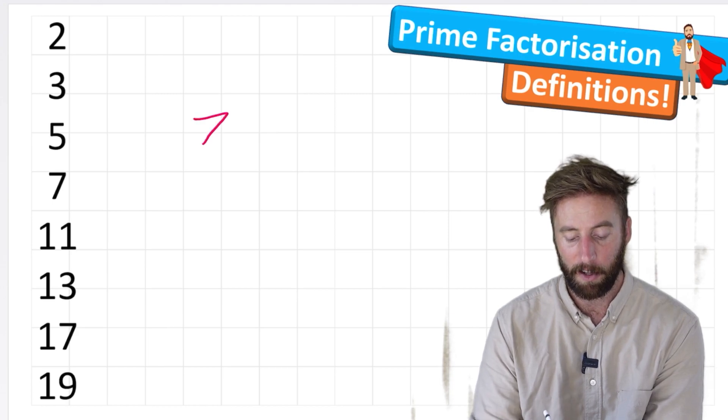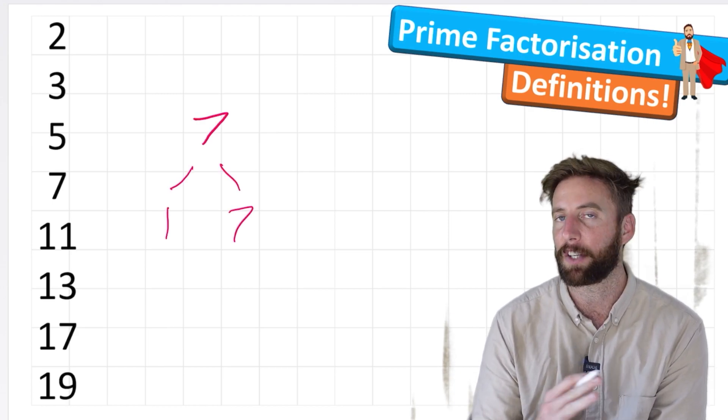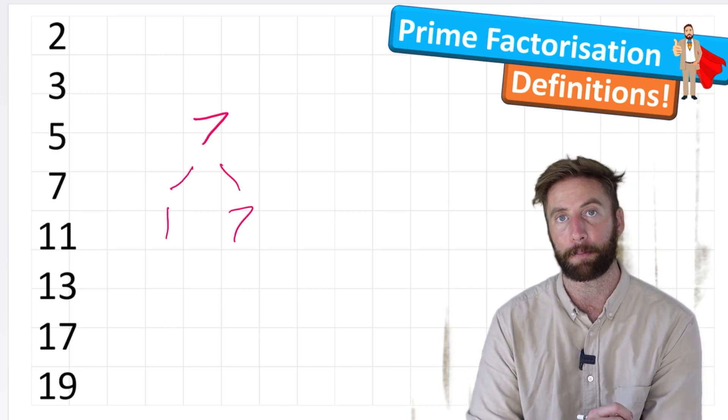For example, number 7, the only factors are 1 and 7. 7 is not divisible by anything else, so therefore it's a prime number.